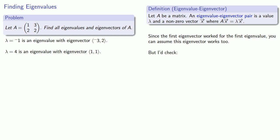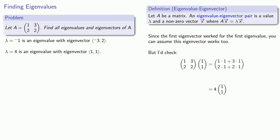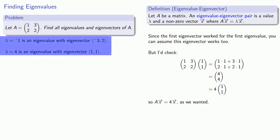The matrix A applied to the vector (1, 1) should give us a scalar multiple of (1, 1) — specifically 4 times (1, 1). Applying our matrix to (1, 1) gives us (4, 4), which is indeed 4 times our original vector. So now we have two eigenvalues and their corresponding eigenvectors.